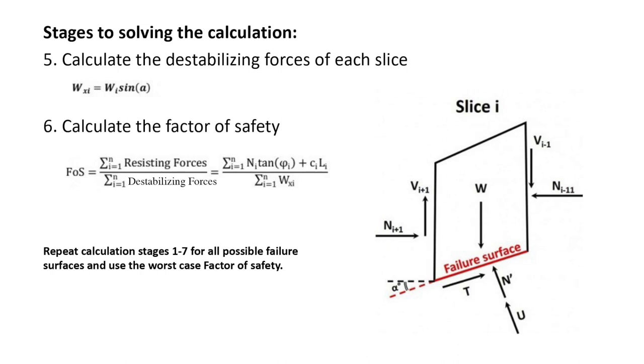Calculation stages 1 to 7 should then be repeated for all possible failure surfaces of the slope, with the worst-case factor of safety then adopted.